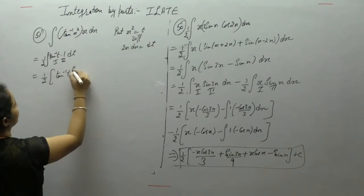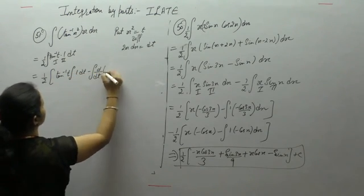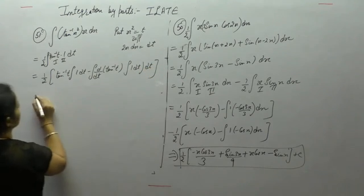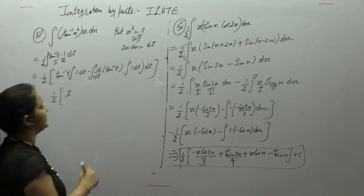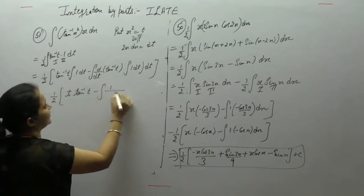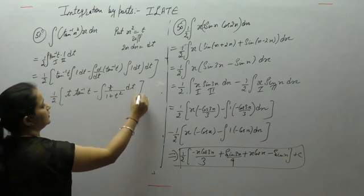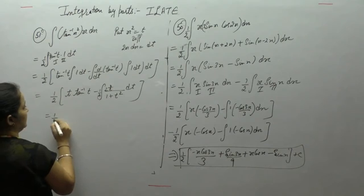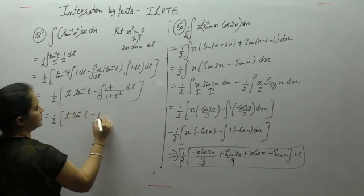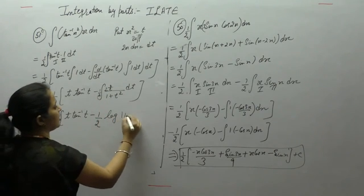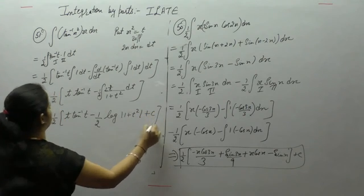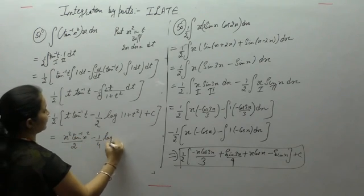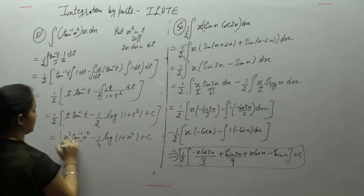Integral of second minus derivative of first into integral of second. We have 1 by 2 where integral of 1 is t, t tan inverse t, and derivative of tan inverse is 1 upon (1 plus x²). Completing the derivative: derivative of 1 is 0, derivative of t² is 2t. So 1 by 2 gives t tan inverse t, and since f′(x) upon f(x) equals log f(x), with t equal to x², the final result is x² tan inverse x² upon 2 minus 1 by 4 log of (1 plus x⁴) plus c.